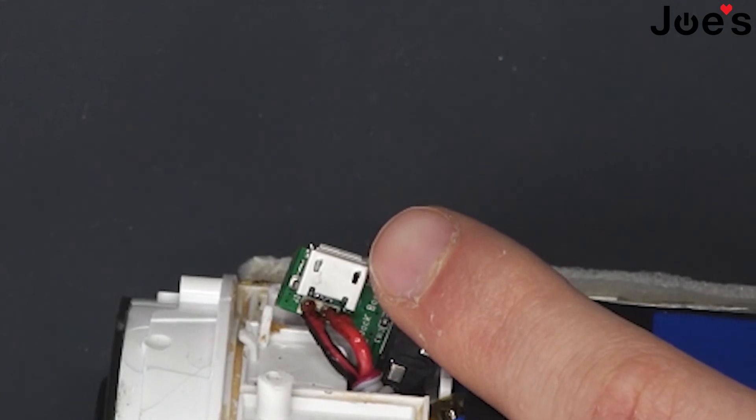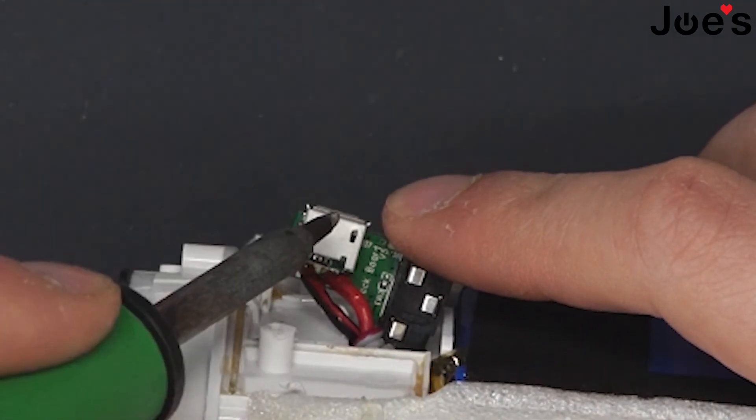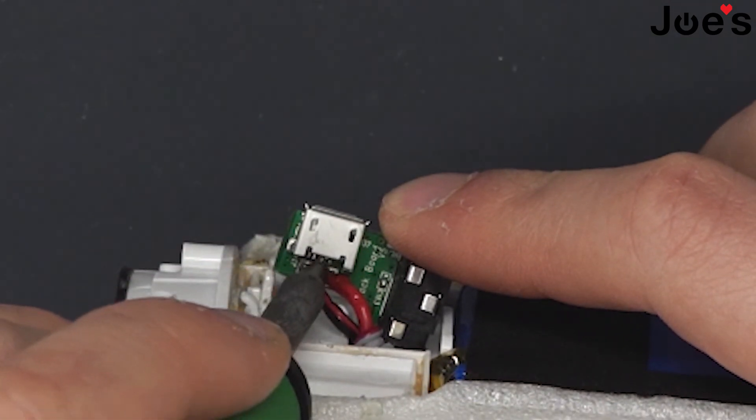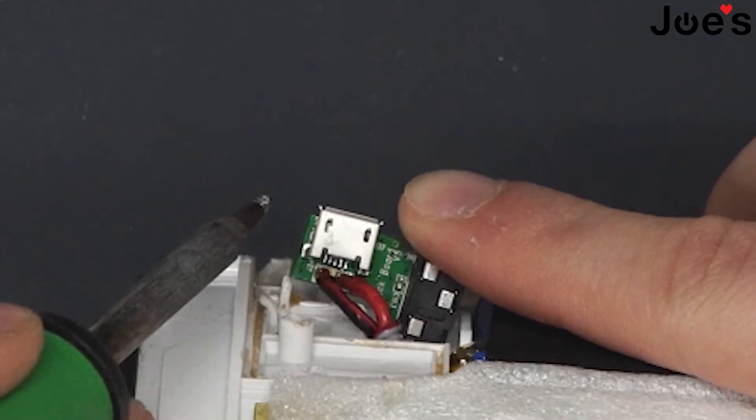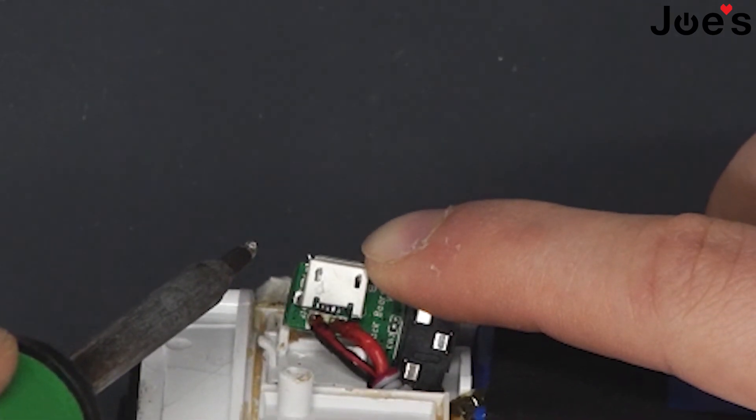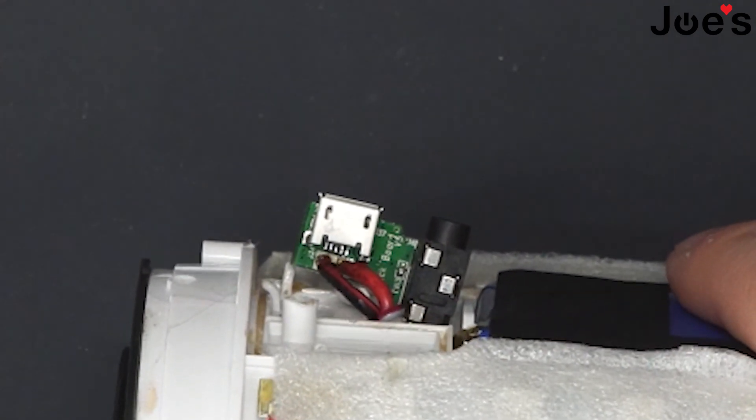You're trying to get the solder to go over the pins for a secure connection. You want ski slopes running from the ends down onto the pads. This is where a microscope is more helpful, but it's not too bad. There we go - that looks good enough for me.